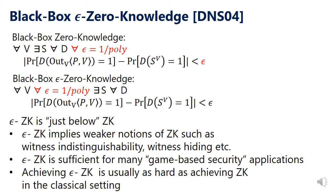This means the simulator can depend on epsilon, which weakens the requirement. However, epsilon zero-knowledge is just below standard zero-knowledge in the hierarchy for the following reasons: first, epsilon zero-knowledge implies weaker notions such as witness indistinguishability and witness hiding; second, it is sufficient for many game-based security applications; and third, achieving epsilon zero-knowledge is usually as hard as achieving zero-knowledge in the classical setting. We therefore believe epsilon zero-knowledge is a very mild relaxation.